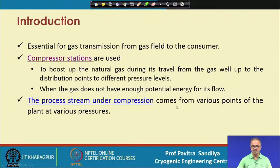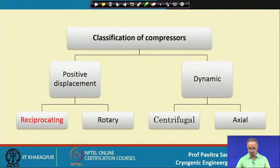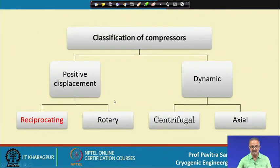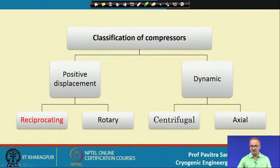The process stream under compression comes in various forms. We have two main types of compressors: positive displacement and dynamic. Under positive displacement we have reciprocating compressors and rotary compressors, and under dynamic we have centrifugal compressors and axial compressors. The reciprocating compressor is the most widely used compressing system for the natural gas industry.